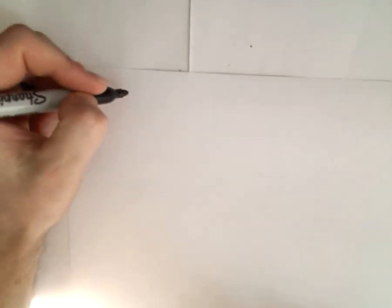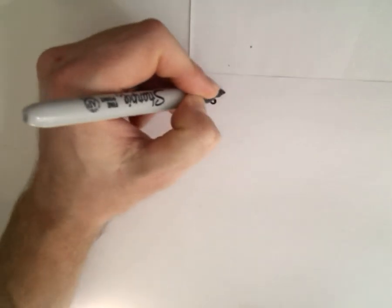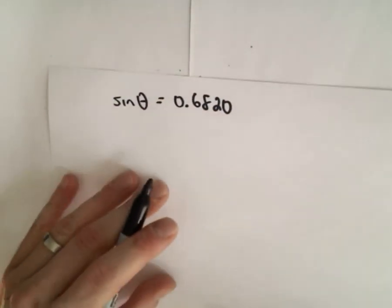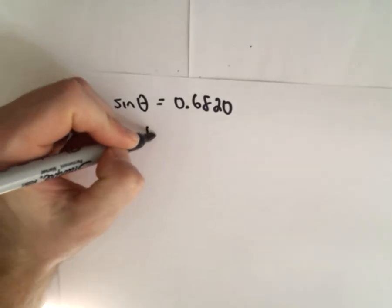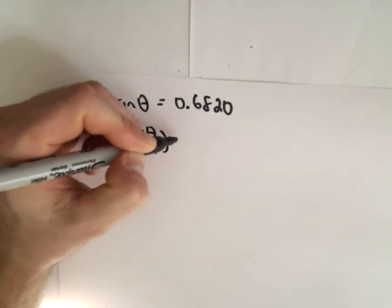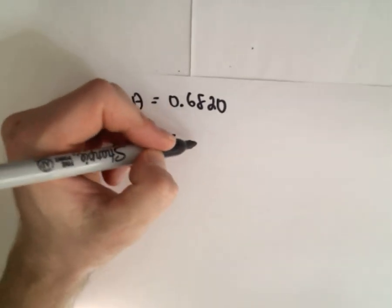Last but not least. Okay, here we're given that sine theta is 0.6820. We know that theta is in quadrant one. We want to find cosine of theta over two. Well again, we can use the identity that we just saw.